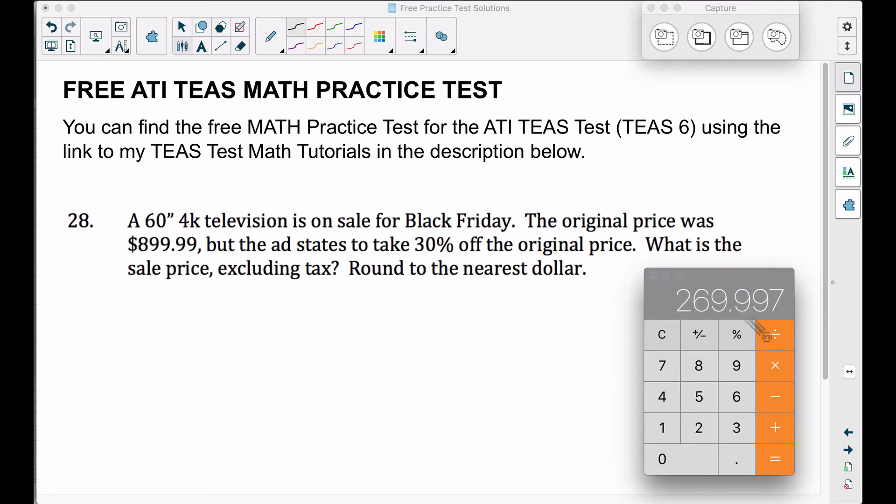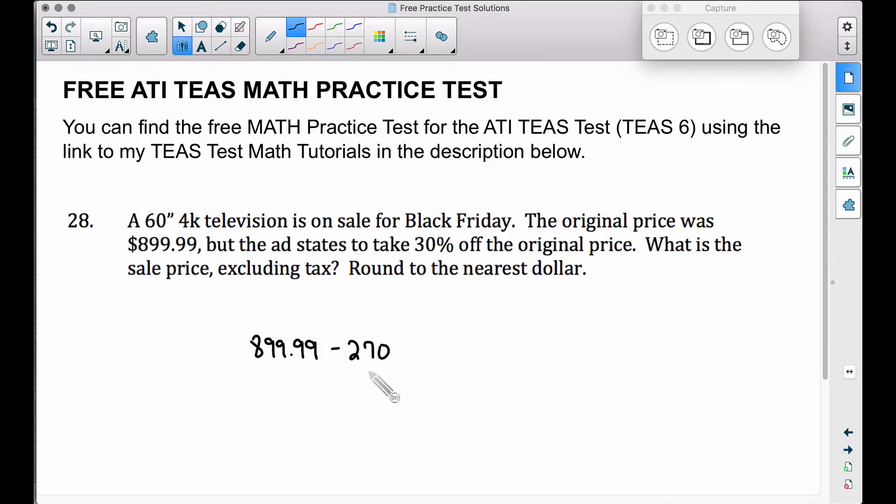Now, this is not how much money you're going to pay. This is the price that you're getting off of this television right here. So you're pretty much getting 270 bucks off. So that is your discount, pretty much 270 bucks. And since we're going to round to the nearest dollar, we could just take 900 and subtract 270, but 899.99 minus 270 is approximately 630 bucks.